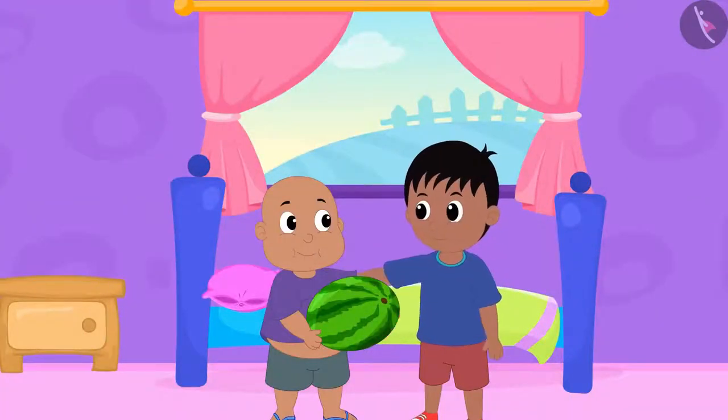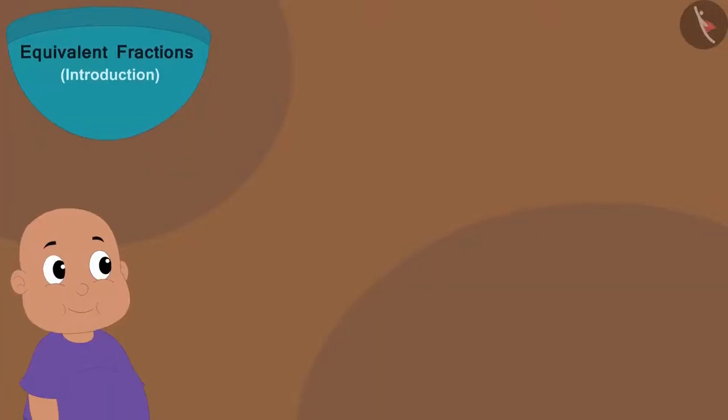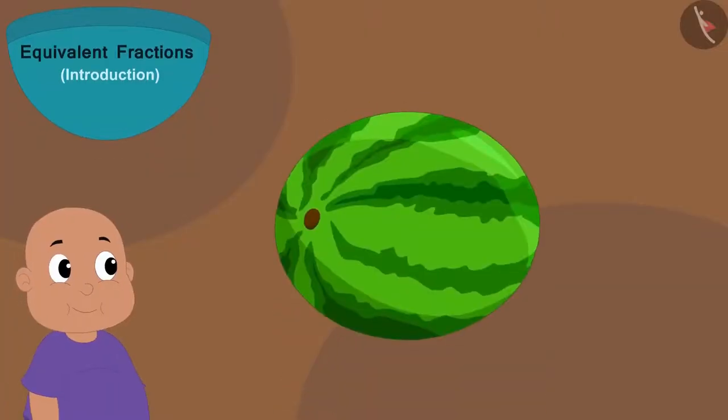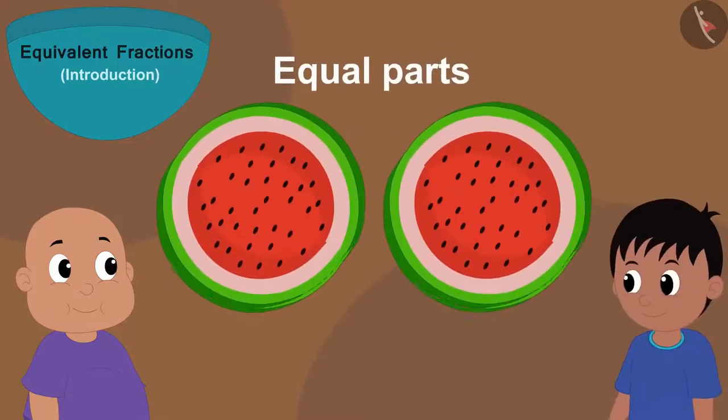Now, Raju told Bablu that he should divide the watermelon in two halves. Bablu cut the watermelon in two equal parts and gave one part to Raju.